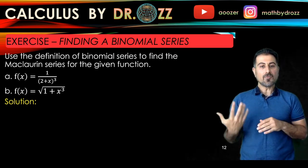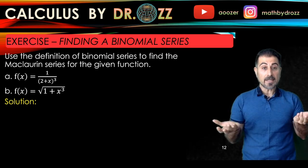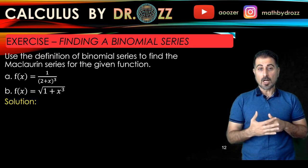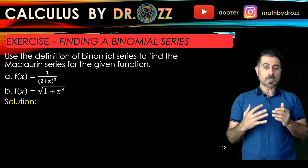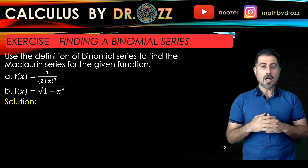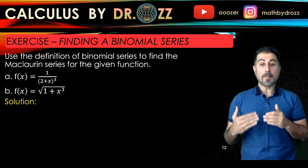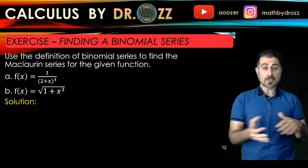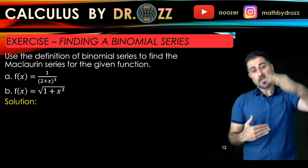Binomial series come with a very special form. For example, f(x) equals (1 + x) to the power of k. k could be an integer or even a rational number. So today we're going to utilize binomial series to write down the Maclaurin series for the given functions in one shot without going into the details of finding the derivatives of the function.